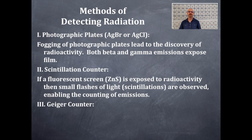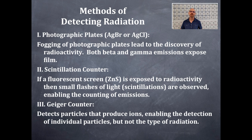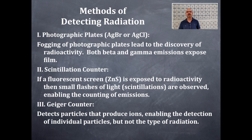Number three is a Geiger counter. It detects particles that produce ions, enabling the detection of individual particles, but not the type of radiation. Both high-energy beta particles and gamma emissions will be detected with a Geiger counter. Alpha particles will not, for the most part, because they don't travel very far. So if you see in any movies someone with a machine that makes that clicking sound, that's a Geiger counter.